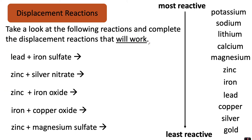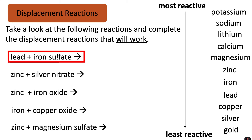For the first one, lead is less reactive than iron, so lead cannot displace the iron from iron sulphate. Well done if you worked out that this one will not work.